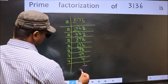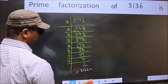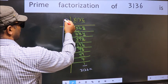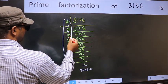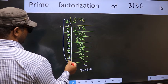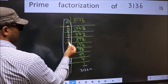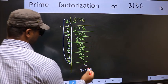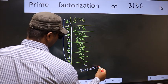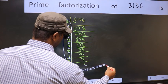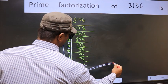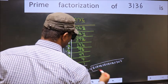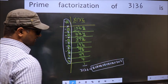So the prime factorization of 3136 is the product of these numbers. How many times did we get 2? 1, 2, 3, 4, 5, 6. So 2×2×2×2×2×2, finally into 7 into 7. This is the prime factorization of 3136.